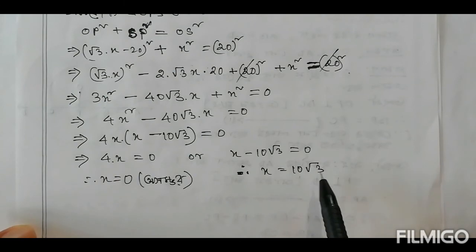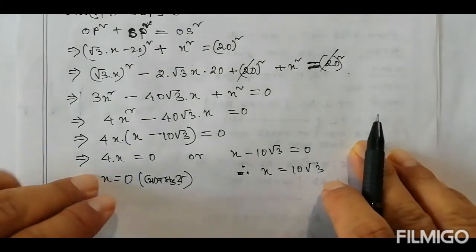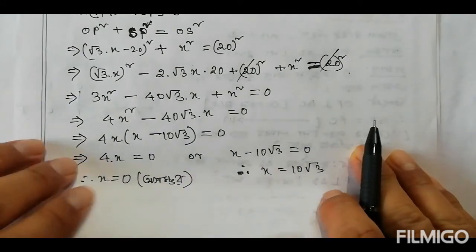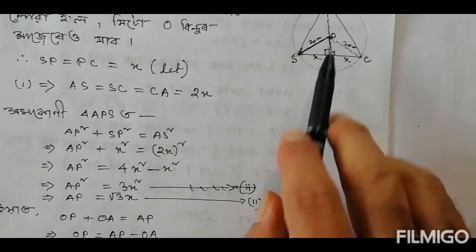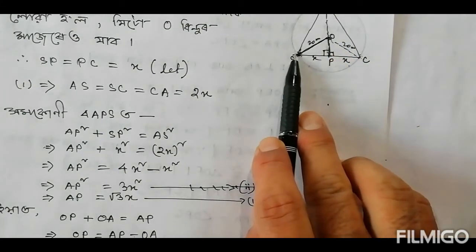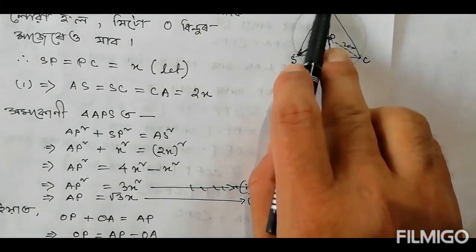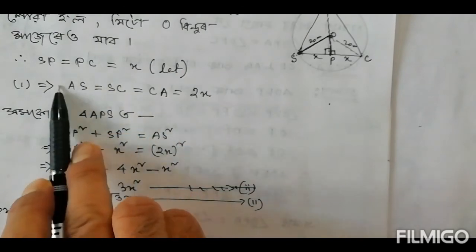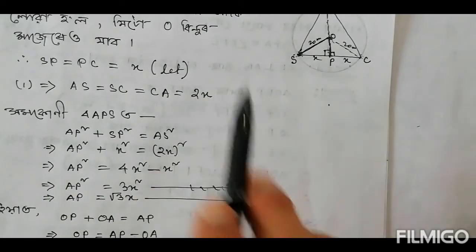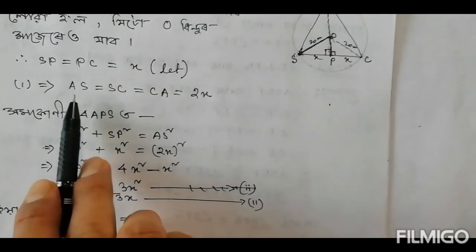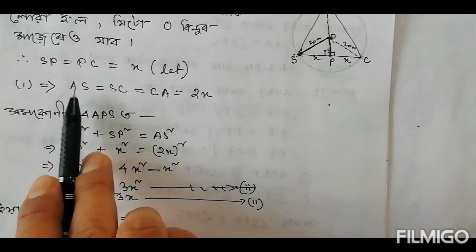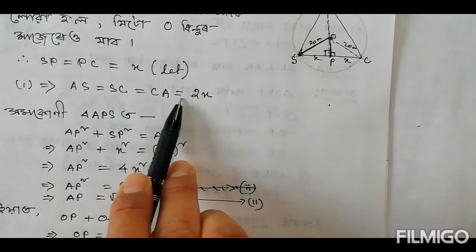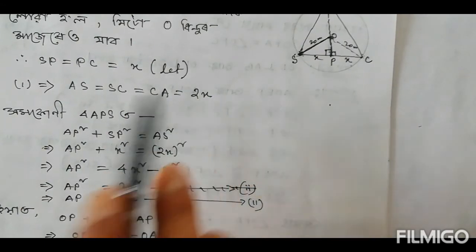Now, we can add 10 root over 3. So AS equals SC·CA, and I will write 2 into x, which gives 2 into 10 root over 3.